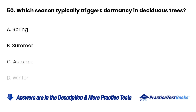Question 50: Which season typically triggers dormancy in deciduous trees? a. Spring. b. Summer. c. Autumn. d. Winter.